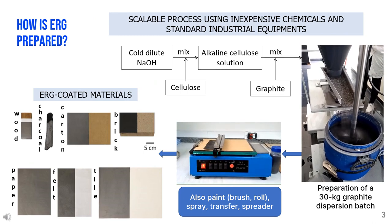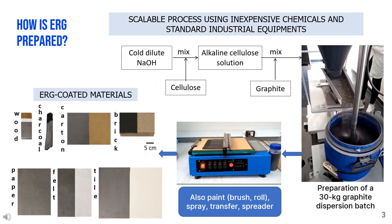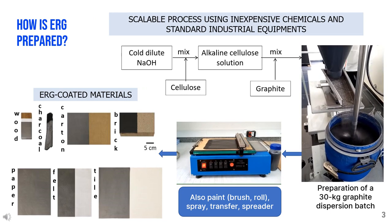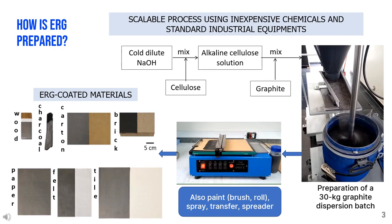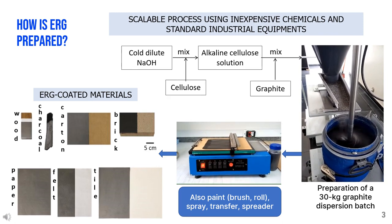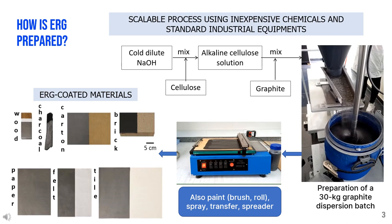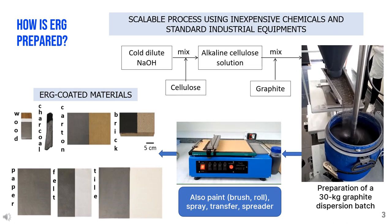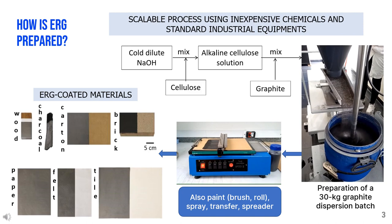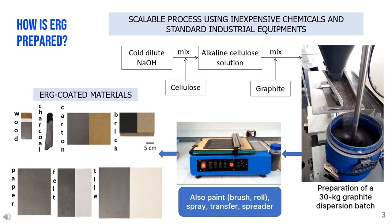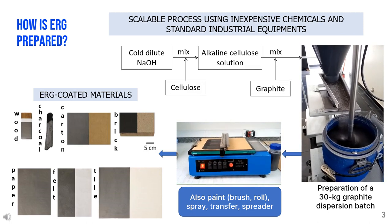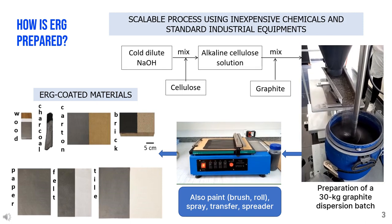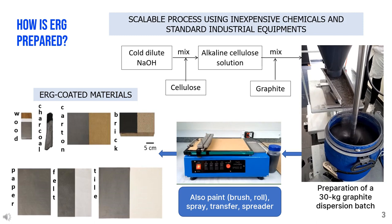ERG dispersions are prepared by adding graphite powder to alkaline NaOH cellulose solutions and mixing, taking care to separate lamellae but not breaking them. The dispersions easily coat different surfaces using various painting and coating techniques. The equipment used is widespread in the painting industry and the fabrication process requires mild conditions only. Thus, process scaling up should not present significant difficulties.